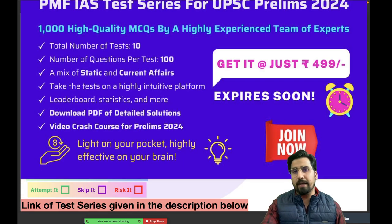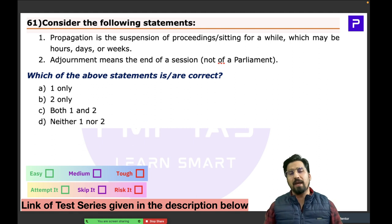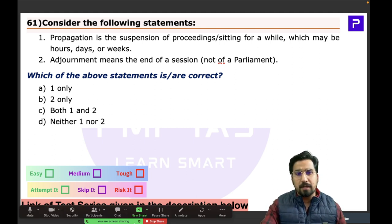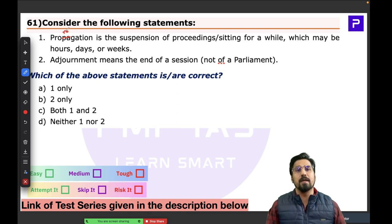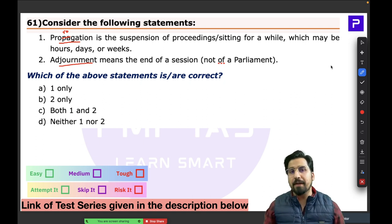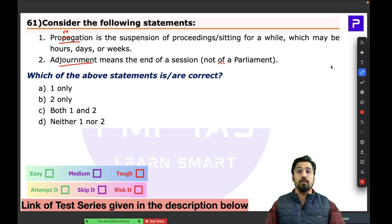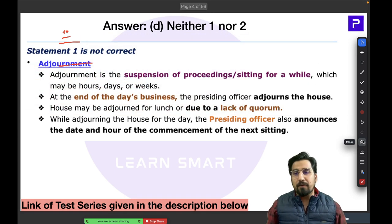The 61st question was with respect to two very important procedures in the Parliament of India. The first procedure is prorogation — note the spelling — and the second is adjournment. These are two important tools in parliamentary procedure. The question had the meanings of the two interchanged. What exactly is adjournment? This is something very common — you must have heard that the house is adjourned.